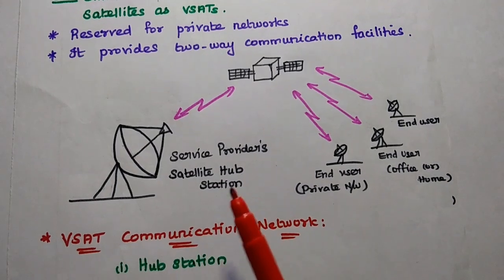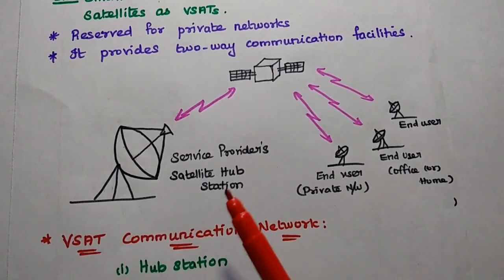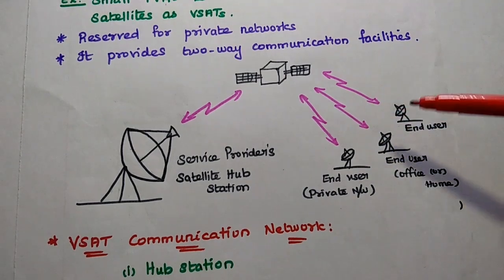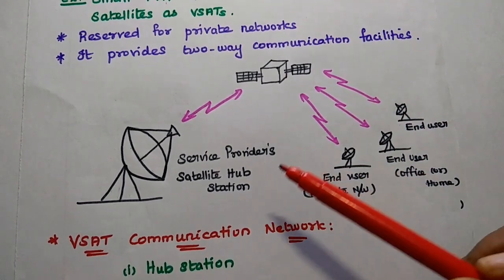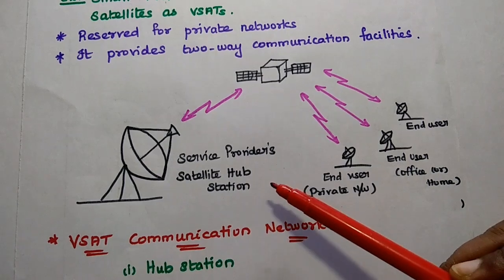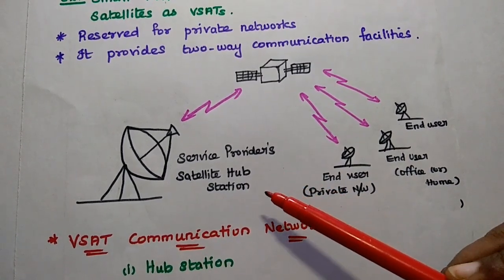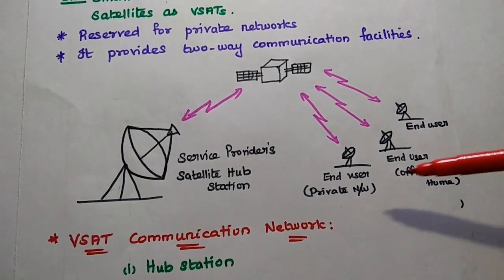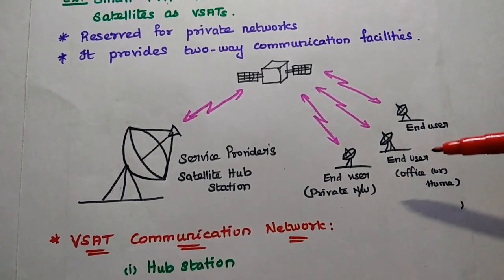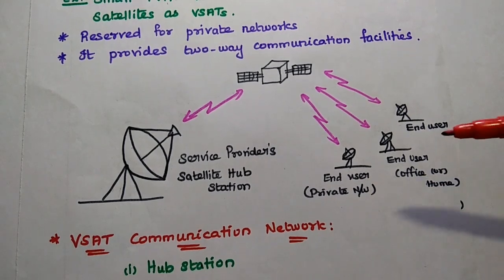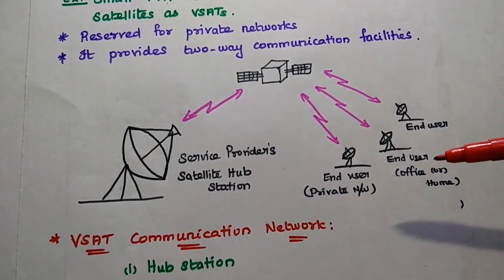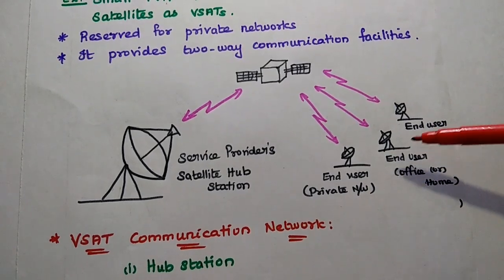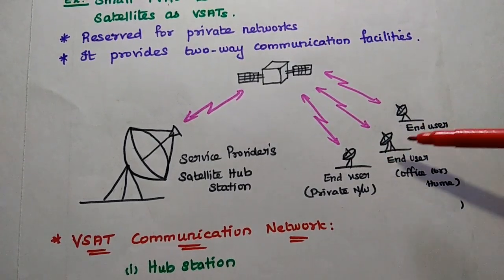The Service Provider's Hub Station is very important because it provides broadcast facilities to all the V-SATs in the network. This Hub Station is operated and controlled by the Service Provider, and it can be shared among multiple end-users in the network — such as small offices with many PCs, banking organizations, supermarket shops, and home office users.